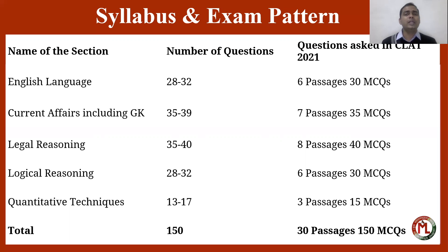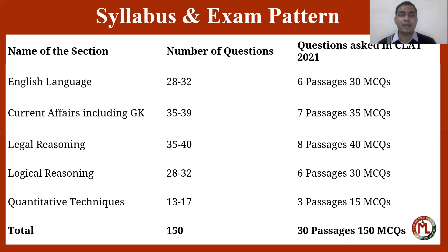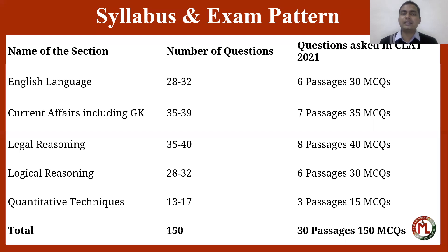Because you don't have that much time, make sure that from now itself you put a lot of effort into comprehension and have a lot of mock tests so your practice becomes very good. You can see on the screen: there will be an estimated 28 to 32 questions — last year there were six passages in English followed by 30 questions, so one passage is followed by five questions. In Current Affairs there were seven passages followed by 35 questions, in Legal Reasoning eight passages followed by five questions each — total 40 questions. In Logical Reasoning, six passages followed by 30 questions, and then three passages in Maths where they have introduced data interpretation in tabular, chart, or pie chart form, and then passage-based questions as well.